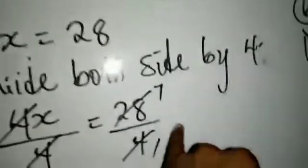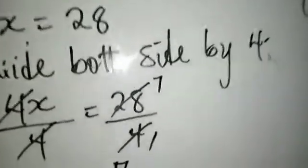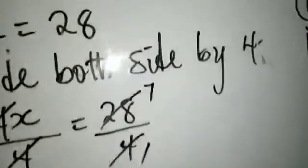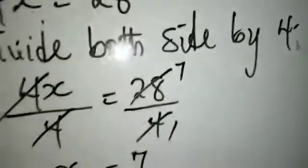How did I get that? Because if I say 4 times 1 is 4, 4 times 2 is 8, 4 times 3 is 12, 4 times 4 is 16, 4 times 5 is 20, 4 times 6 is 24, and 4 times 7 is 28. That means 7 is our answer.